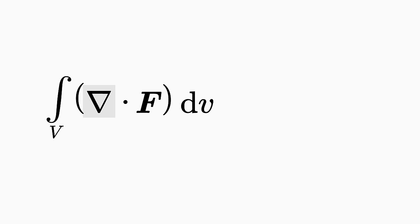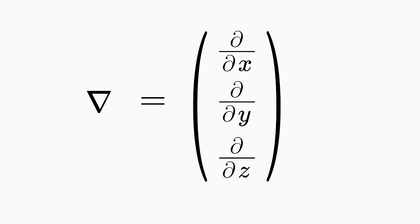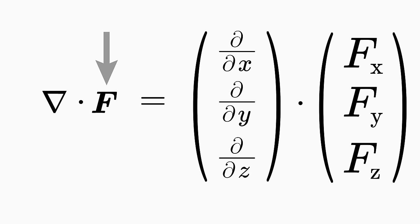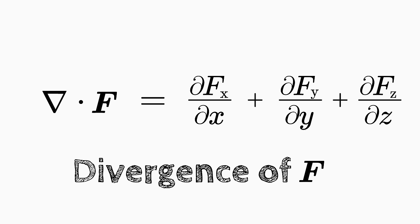The upside-down triangle is called the Nabla operator and it has three components like a vector. Its components, however, are not numbers, but derivatives corresponding to the space coordinates: the first component is the derivative with respect to x, the second with respect to y, and the third with respect to z. Such an operator only takes effect when applied to a field. The Nabla operator is applied to the vector field by taking the scalar product between the Nabla operator and the vector field, yielding the sum of the derivatives of the vector field with respect to x, y, and z. Such a scalar product between the Nabla operator and a vector field F is called the divergence of the vector field F.